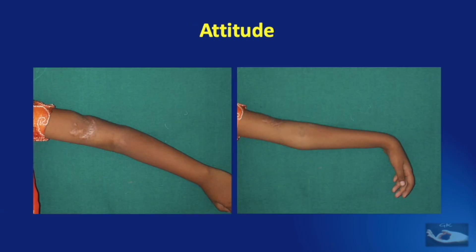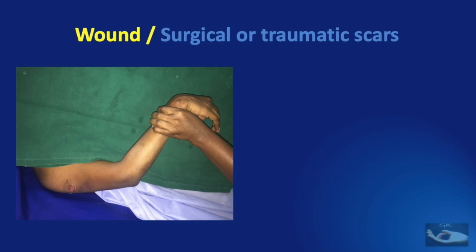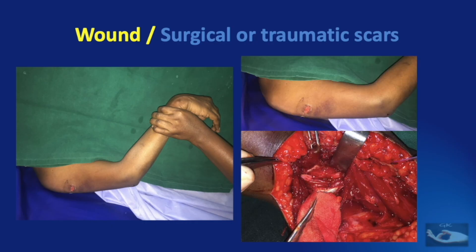These clinical pictures show the typical example of a post-traumatic scar on the lateral aspect of the middle of the arm and the typical position of the hand — that is, wrist drop, thumb drop, and finger drop. This clinical picture shows a very innocent-looking wound on the lateral aspect of the middle of the arm with typical wrist drop, thumb drop, and finger drop. Though the wound looked very small, because of the clinical findings of radial nerve palsy, exploration was done and it revealed a total transection of the radial nerve at the level of the spiral groove.